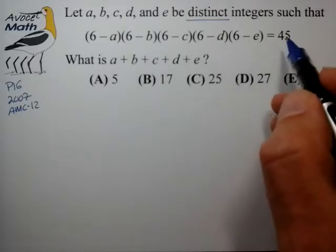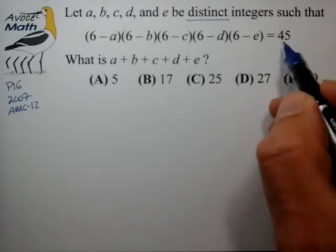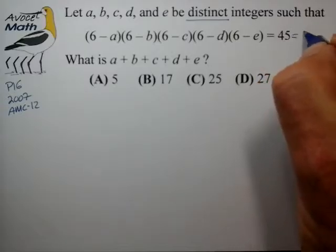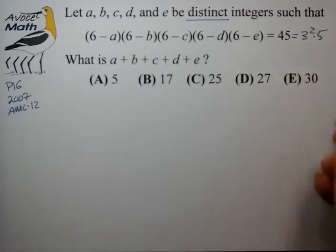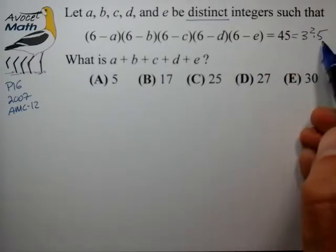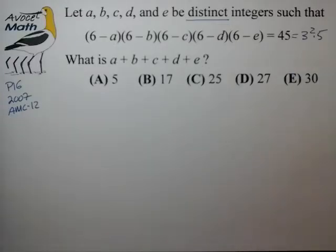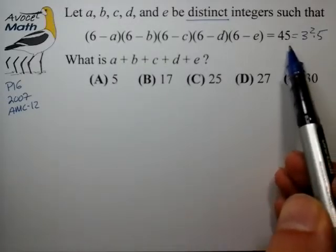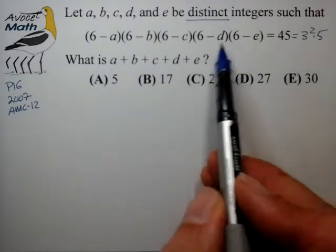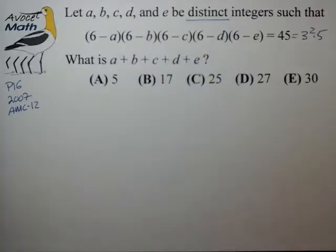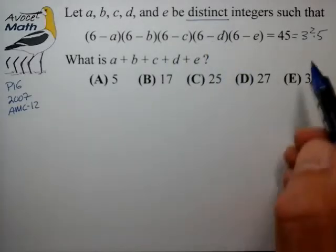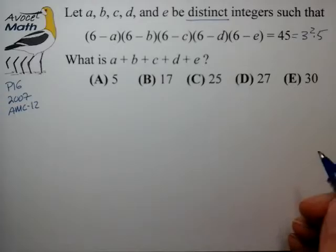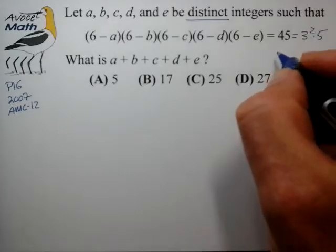So the first thing we want to do in these problems when we encounter a number is break it down to its prime factorization. We notice that 3 squared times 5 gives us perhaps three different factors, so it appears at first we're kind of starved for factors. We have what looks like three factors on the right and five possible factors on the left, so we have to look for ways to increase the number of factors on the right.